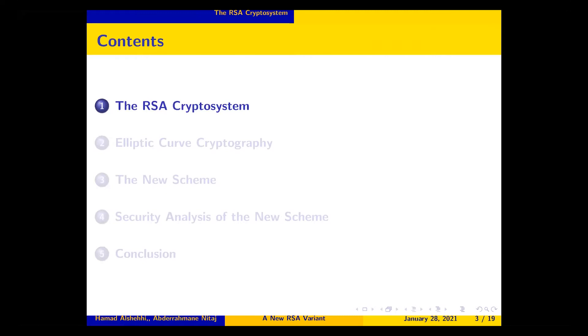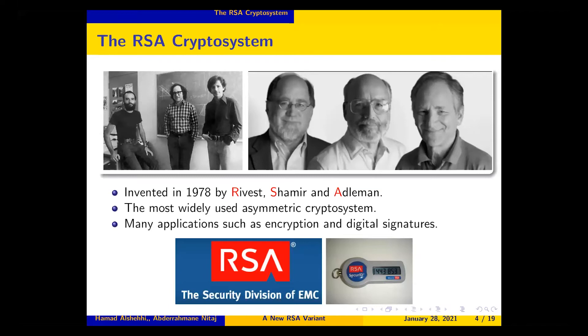The RSA cryptosystem was invented in 1978 by Rivest, Shamir, and Adleman. It is the most widely used asymmetric cryptosystem and has many applications in cryptography for encryption and for digital signatures. Unfortunately, it is not post-quantum because it is not going to resist quantum computers.